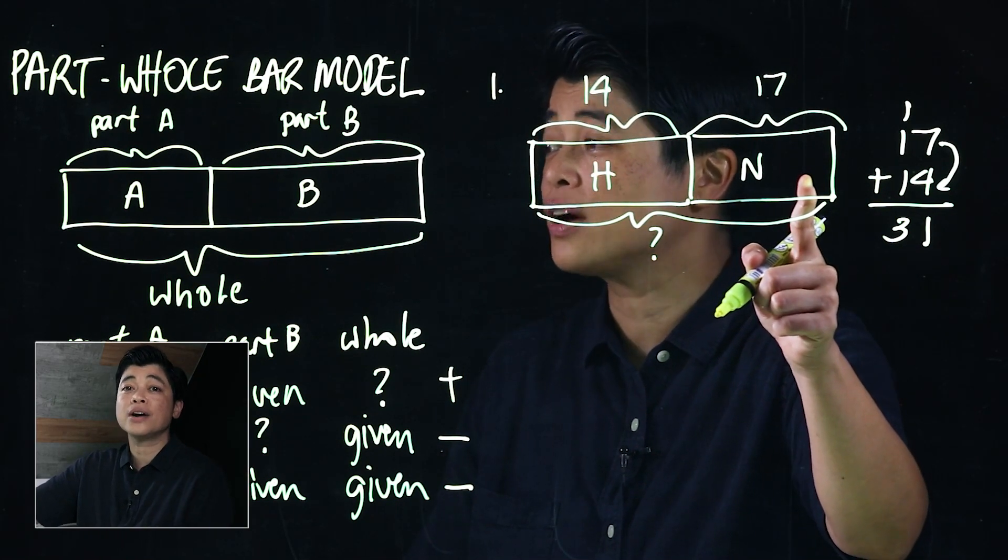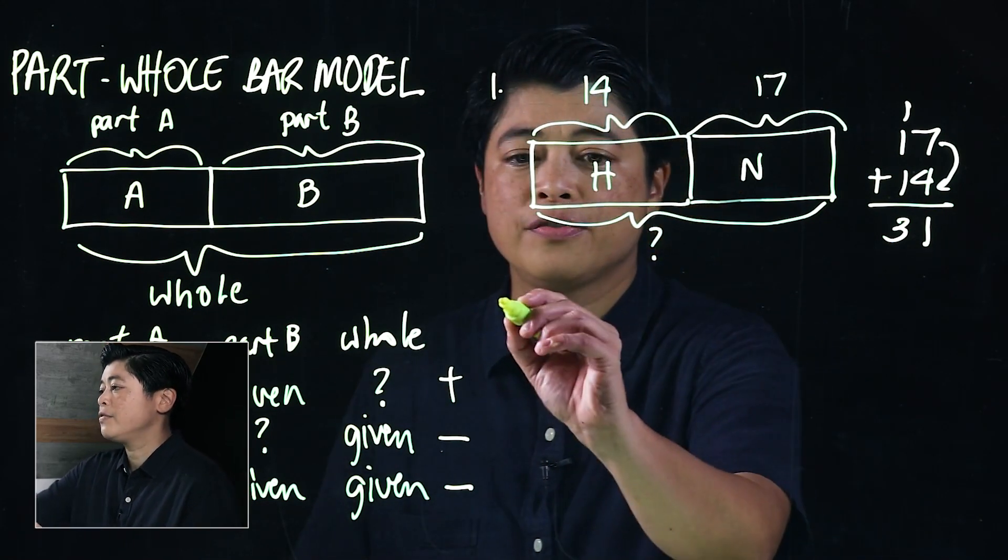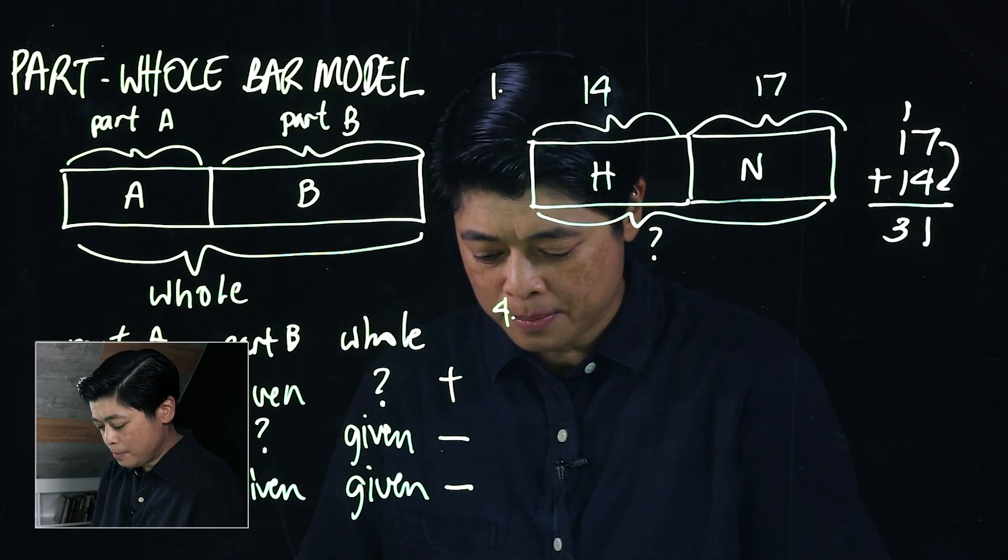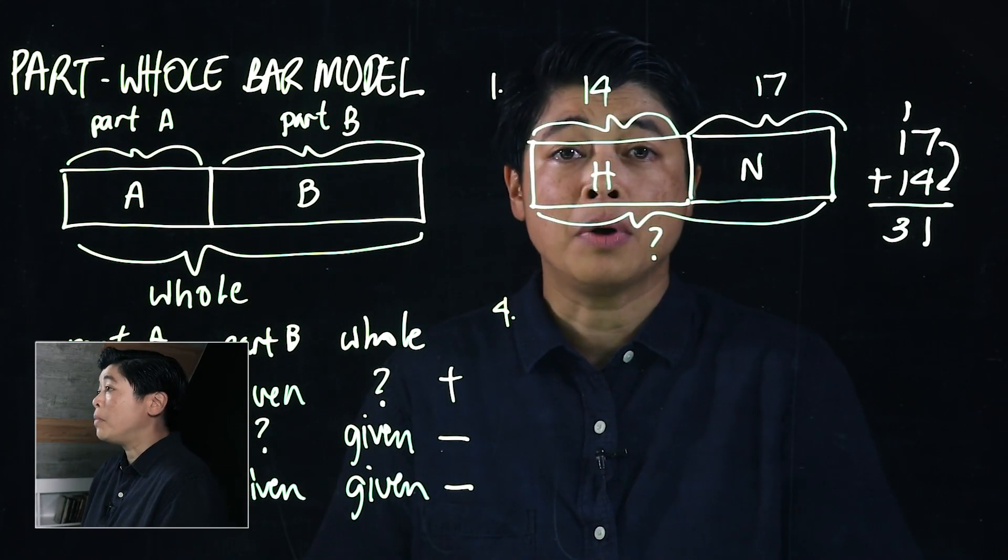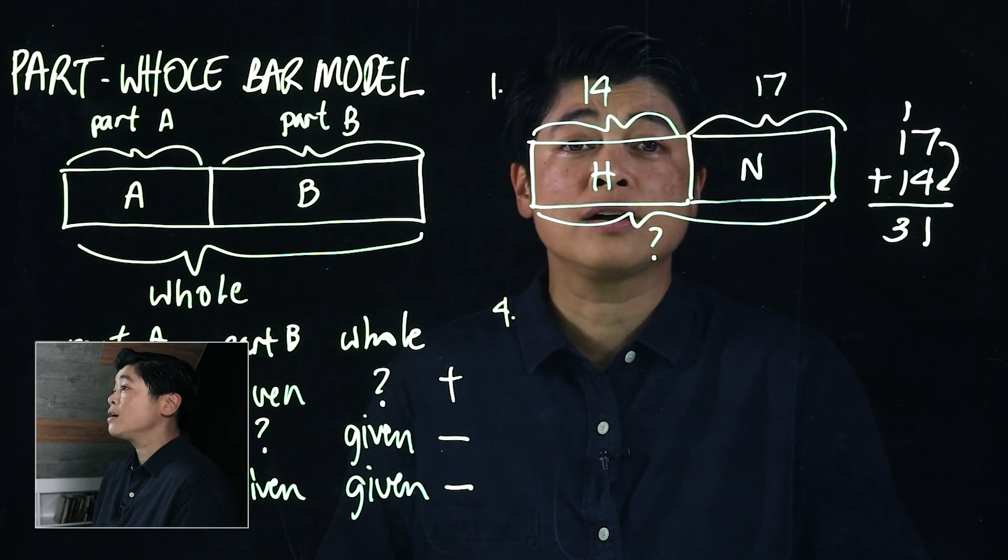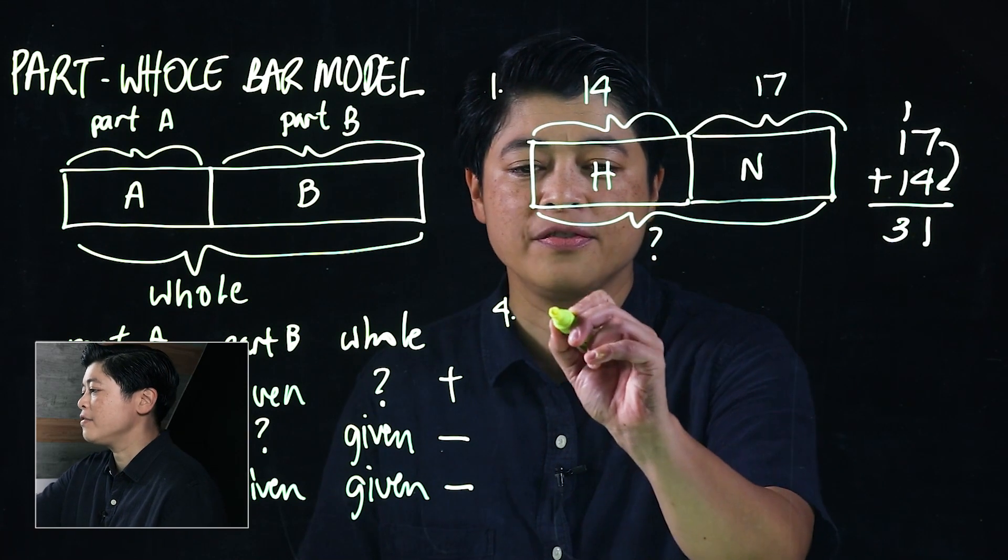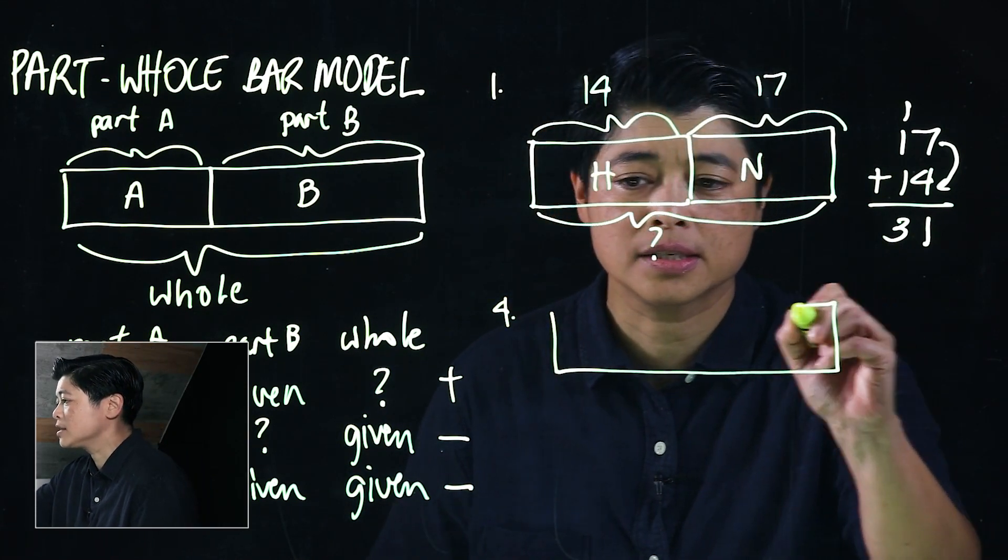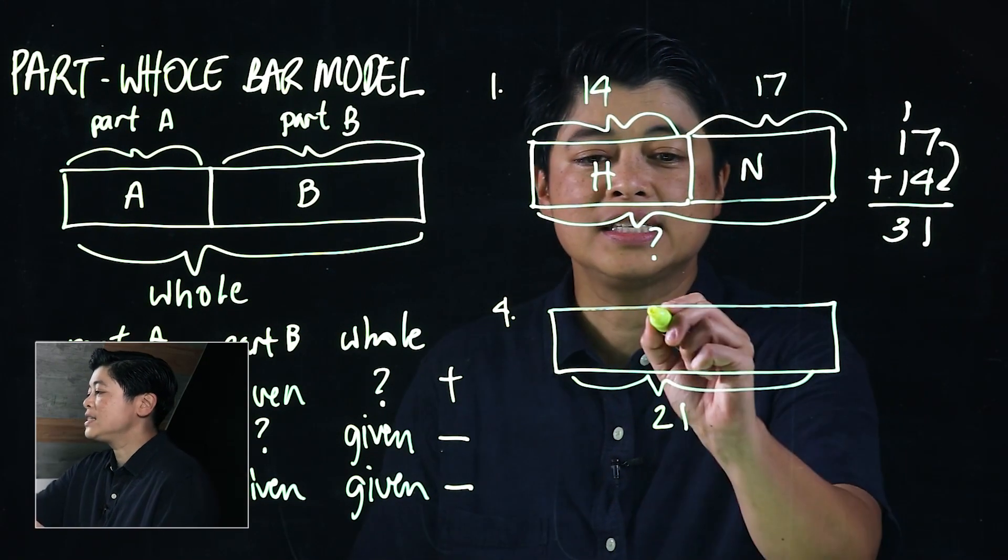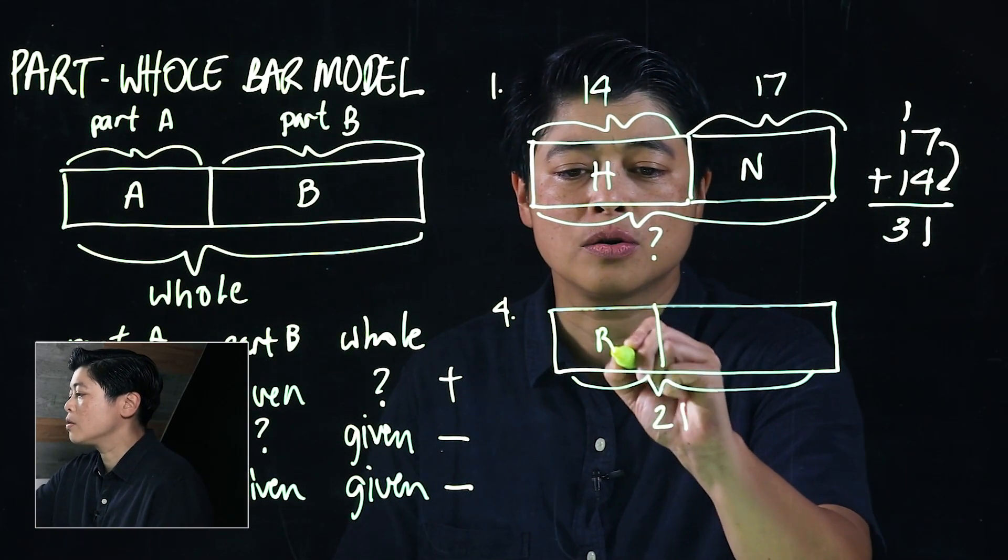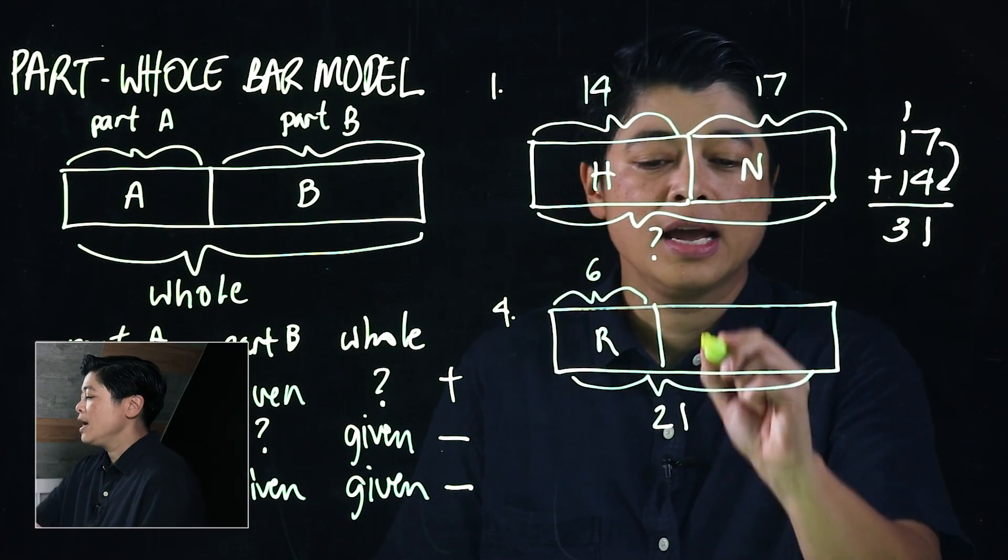The second example is number 4. It says there are 21 mangoes in a box, 6 mangoes are rotten, how many are not rotten. Therefore we have a whole box of 21 mangoes, 6 are rotten.